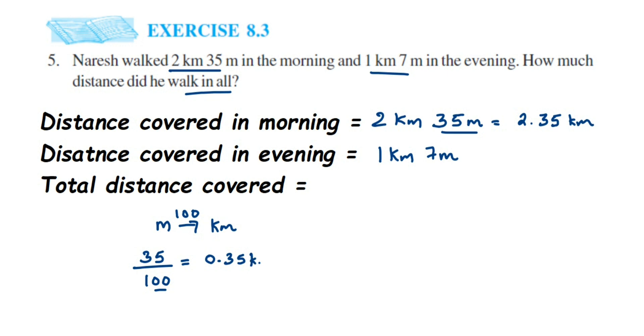Similarly, this one will be 1.07 kilometer. Remember it's 0.07 because it's 7 meter. When you convert 7 meter into kilometer, it will be 0.07.